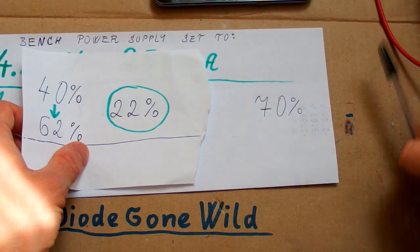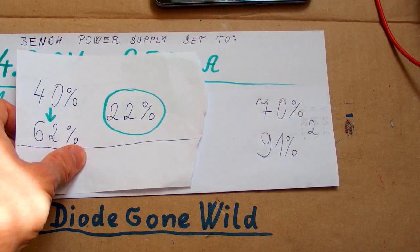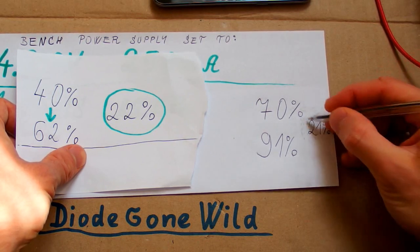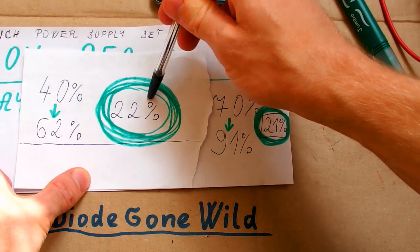So this time it went from 70 to 91%. So it gave me 21% extra charge and this is almost the same result as for the first time.